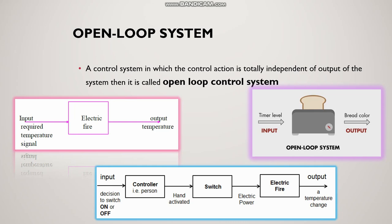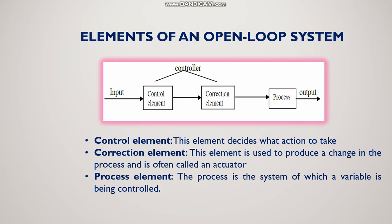What are the elements involved in an open loop control system? Here is a block diagram of the basic elements. For an electric heating system, the elements are: controller — a person controlling the switch; switch — which is the correction element; and electric fire — which is the system. The output variable is temperature, and the input is electricity plus the decision to switch on and off.